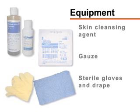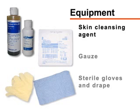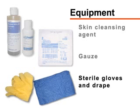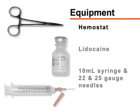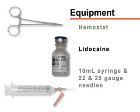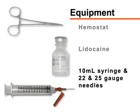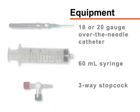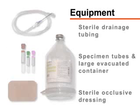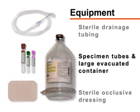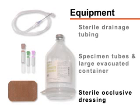For sterile preparation of the site and administration of anesthesia, you will need a skin cleansing agent, sterile gauze, sterile gloves, a sterile drape, a hemostat (which is optional), 1 or 2% lidocaine, and a 10 milliliter syringe with a 22 to 25 gauge needle. For the collection of pleural fluid, you will need an 18 to 20 gauge over-the-needle catheter, a 60 milliliter syringe, and a 3-way stopcock. You will also need sterile drainage tubing, specimen tubes and a large evacuated container, and a sterile occlusive dressing.